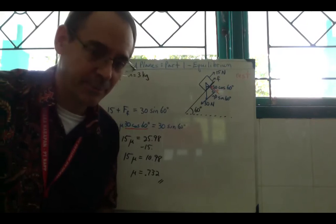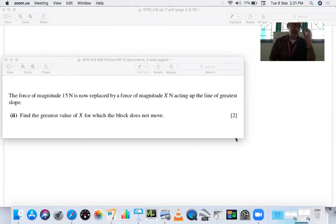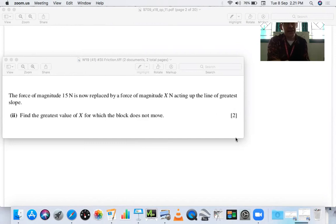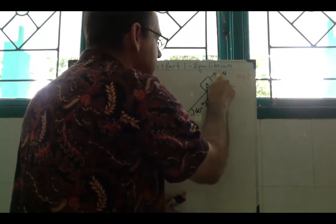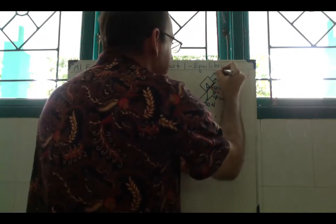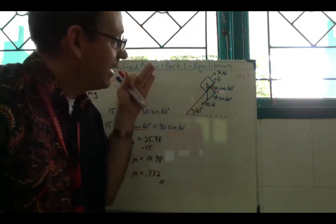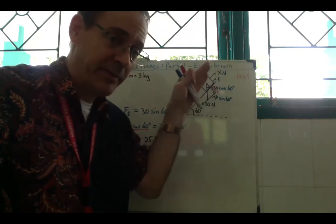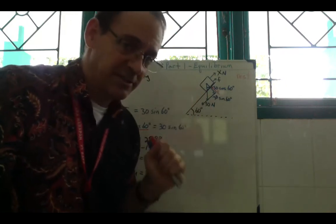Now let's look at the second part of the question. The force of 15 newtons is replaced by a force of magnitude X newtons acting up the line of greatest slope. Find the greatest value of X for which the block does not move. We need to think carefully: X is now big enough that it wants to pull the box up. We want the largest X where the box still isn't moving but wants to move upward.